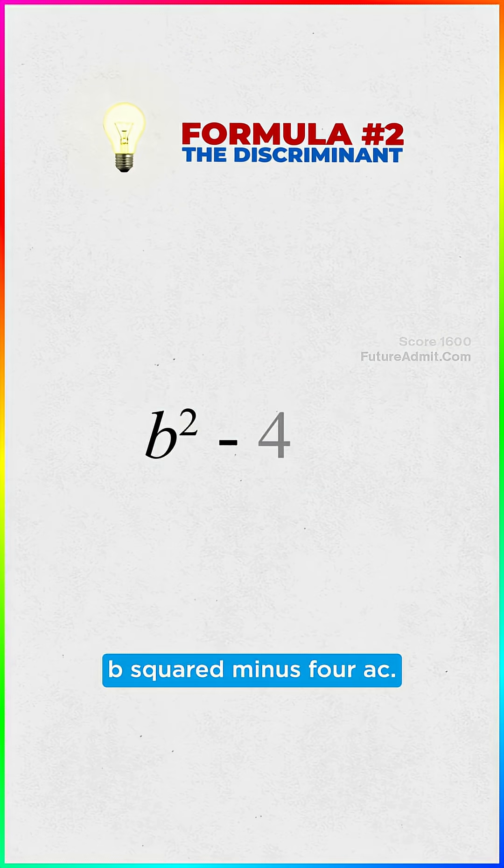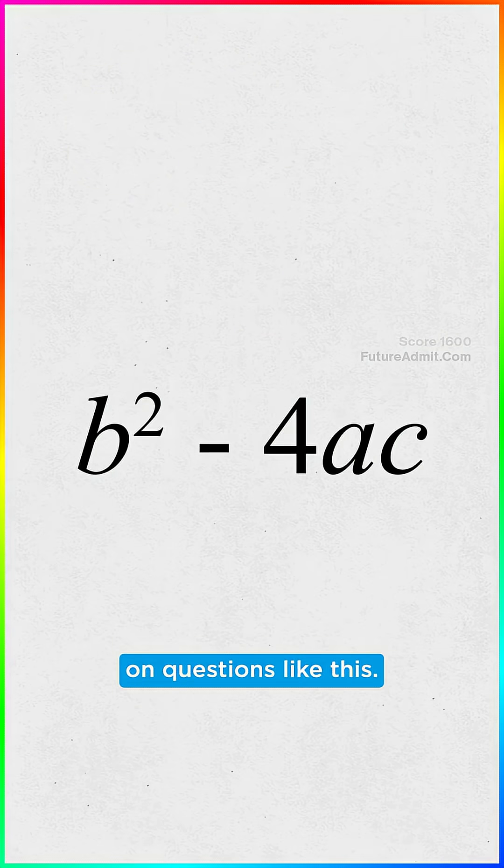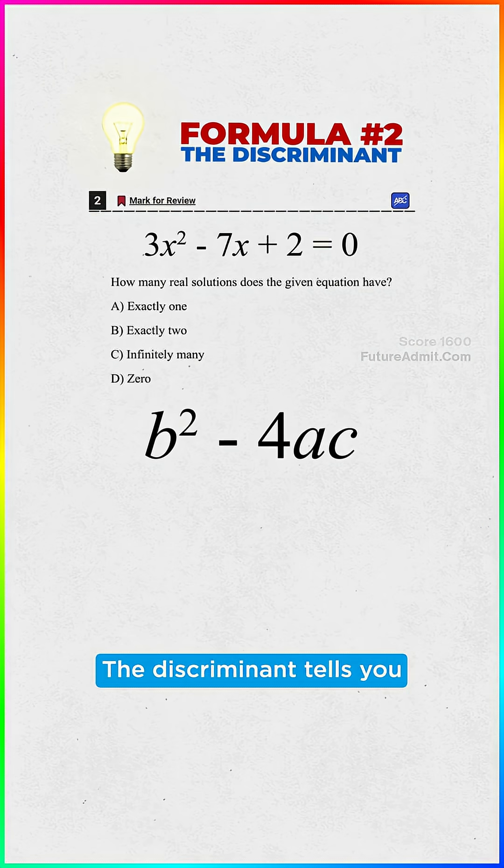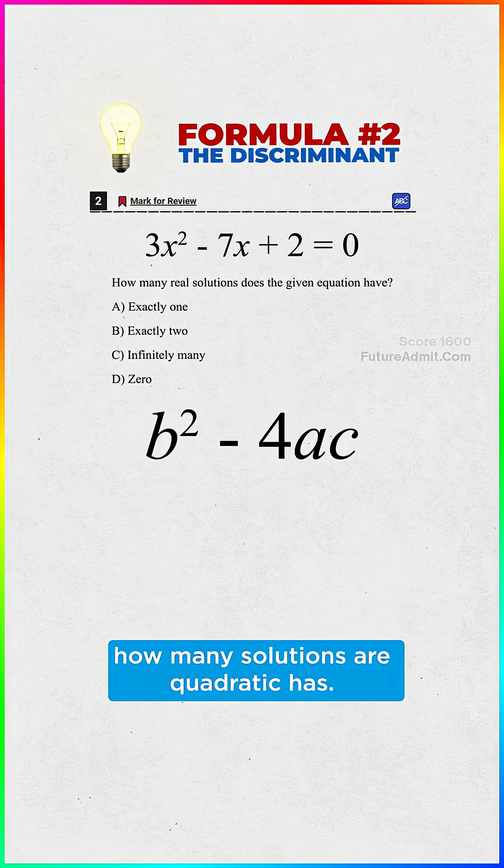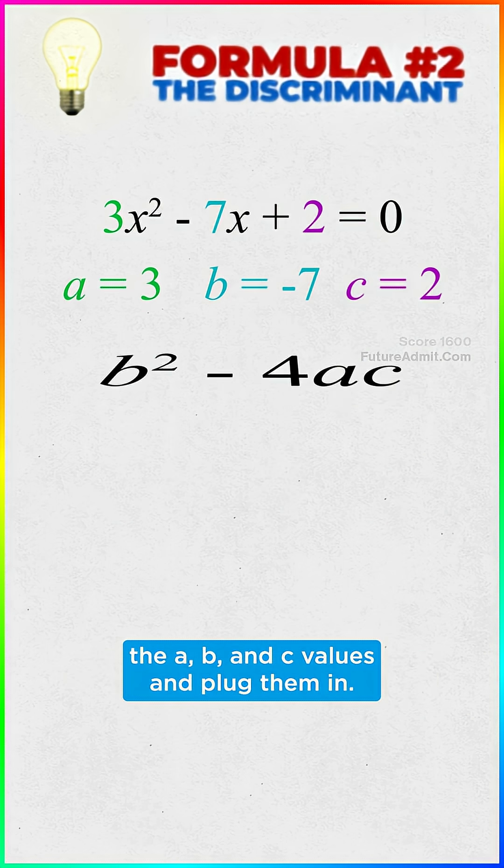Missing Formula 2, the discriminant: b squared minus 4ac. Knowing this formula will save you so much time on questions like this. The discriminant tells you how many solutions a quadratic has. All you gotta do is figure out the a, b, and c values and plug them in.